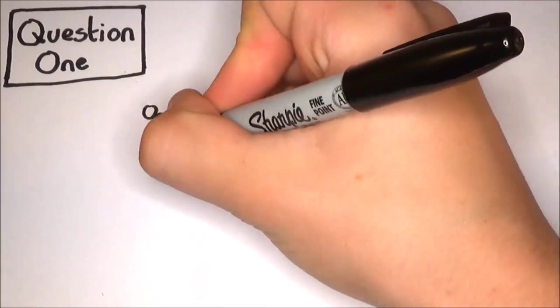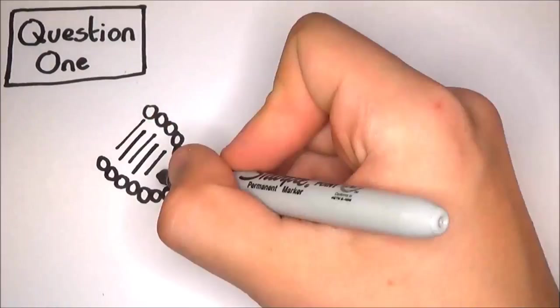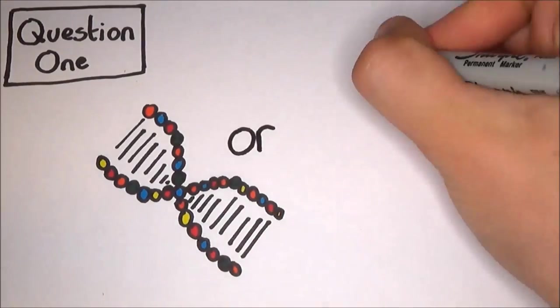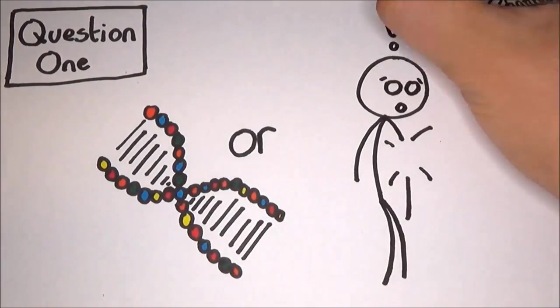Perhaps the first question that needs answering before we can fully understand the ageing process is whether it's something coded into our genes, or simply a case of our bodies wearing out.